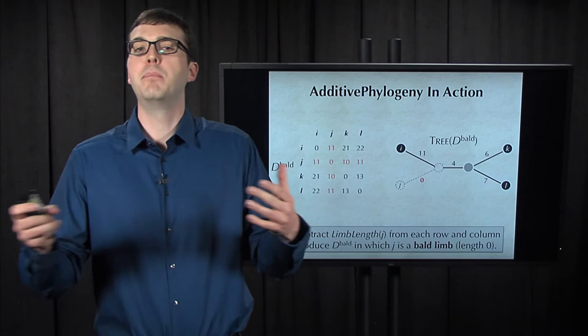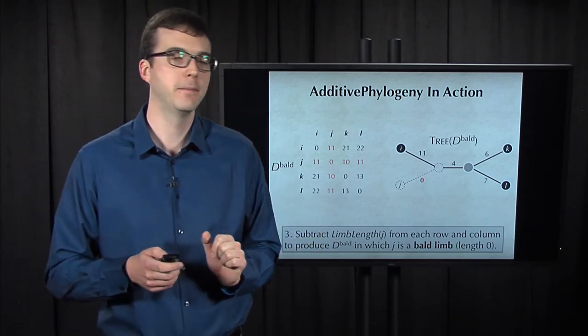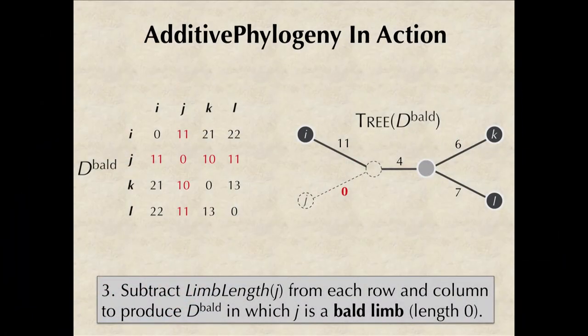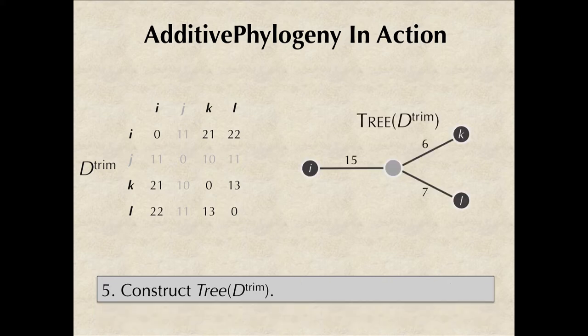We can form a matrix D bald by then subtracting the limb length from each entry in the Jth row and column of D. We will see the purpose of doing this subtraction soon, but note that what we're doing is really compressing J toward its parent so that the limb of J has length 0. This is called a bald limb. So we'll hang on to J for later, but for now let's remove the Jth row and column from the bald matrix to form a smaller matrix called D trim.